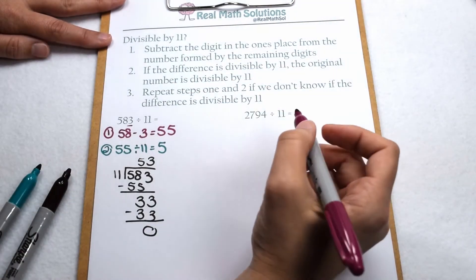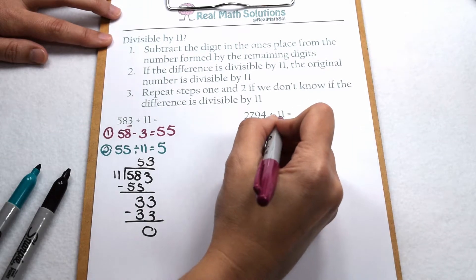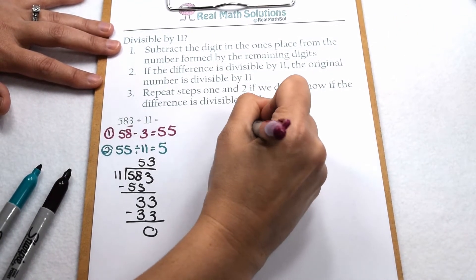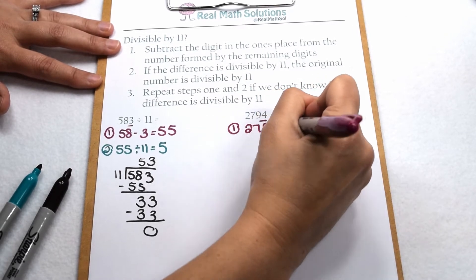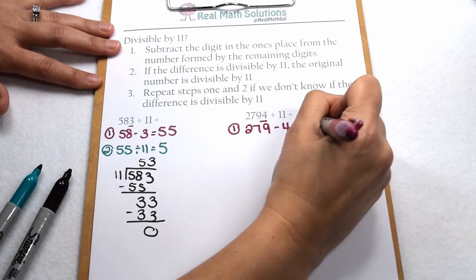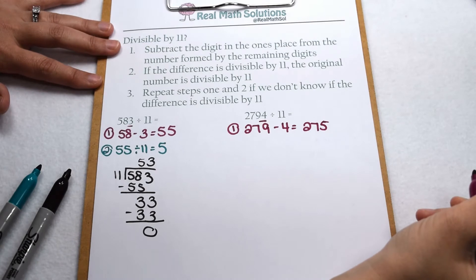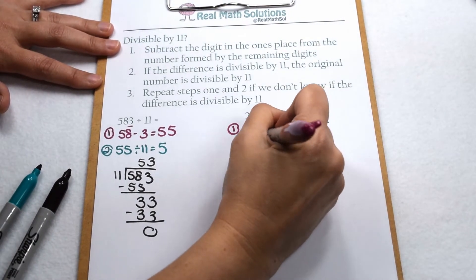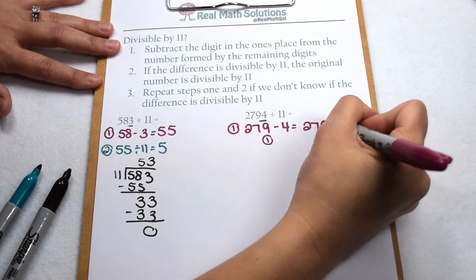Let's test this out on another example. Here I have 2794 divided by 11. Well, the first thing I need to do is subtract the ones place from the remaining digits. So that means I would need to do 279 minus 4. 279 minus 4 is 275. I still don't know if 275 is divisible by 11, but the good news is we can repeat that process for 275.